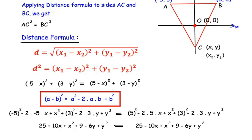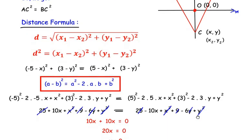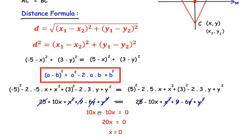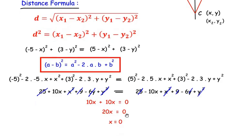From both sides, 25 and 25 cancel, x² and x² cancel, 9 and 9 cancel, -6y and -6y cancel, and y² and y² cancel. We are left with 10x on the left and -10x on the right. Bringing -10x to the left gives 10x + 10x = 0, so 20x = 0, which means x = 0. We have found the x-coordinate of vertex C as 0.